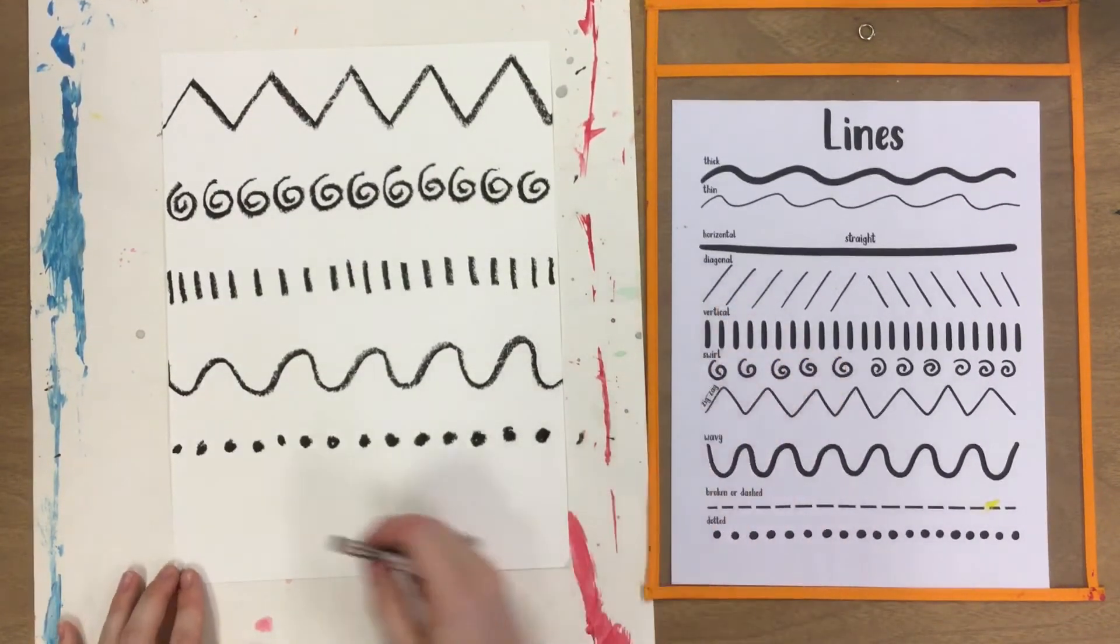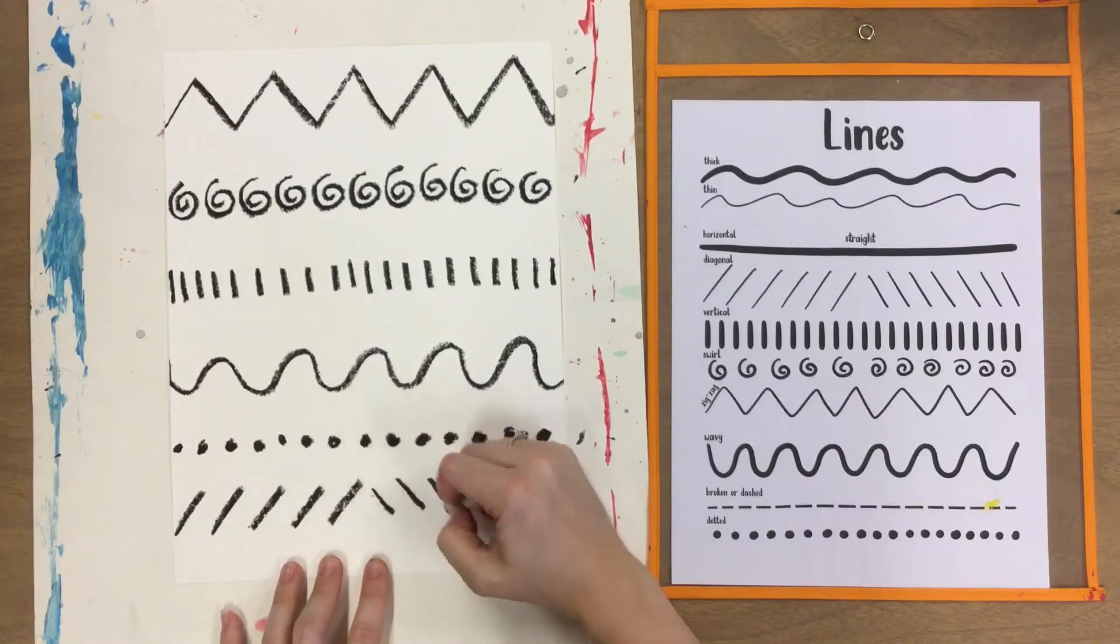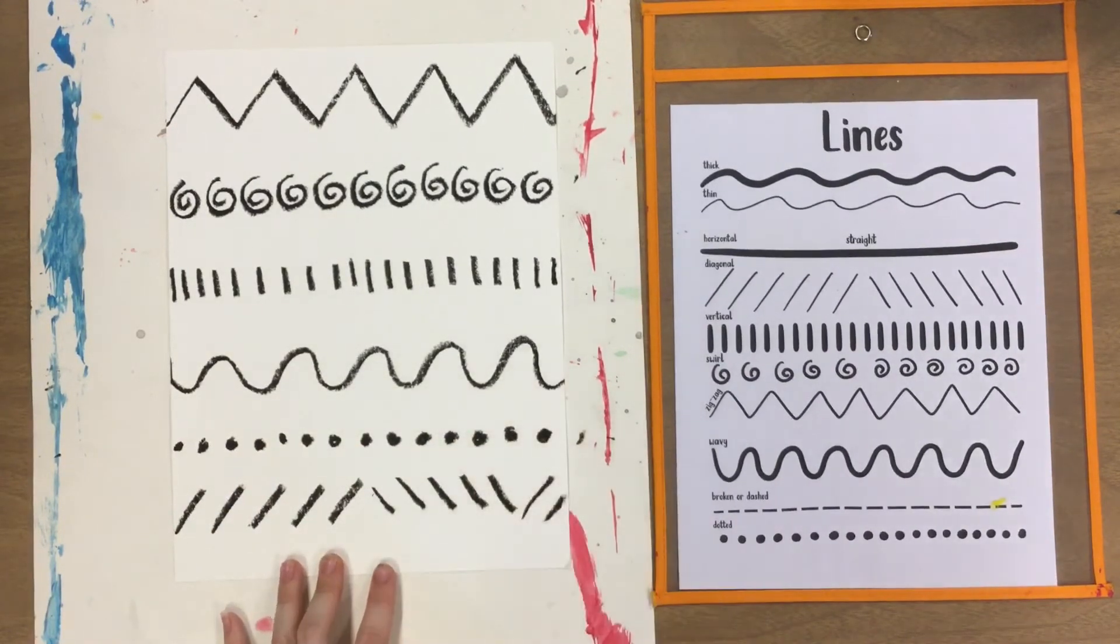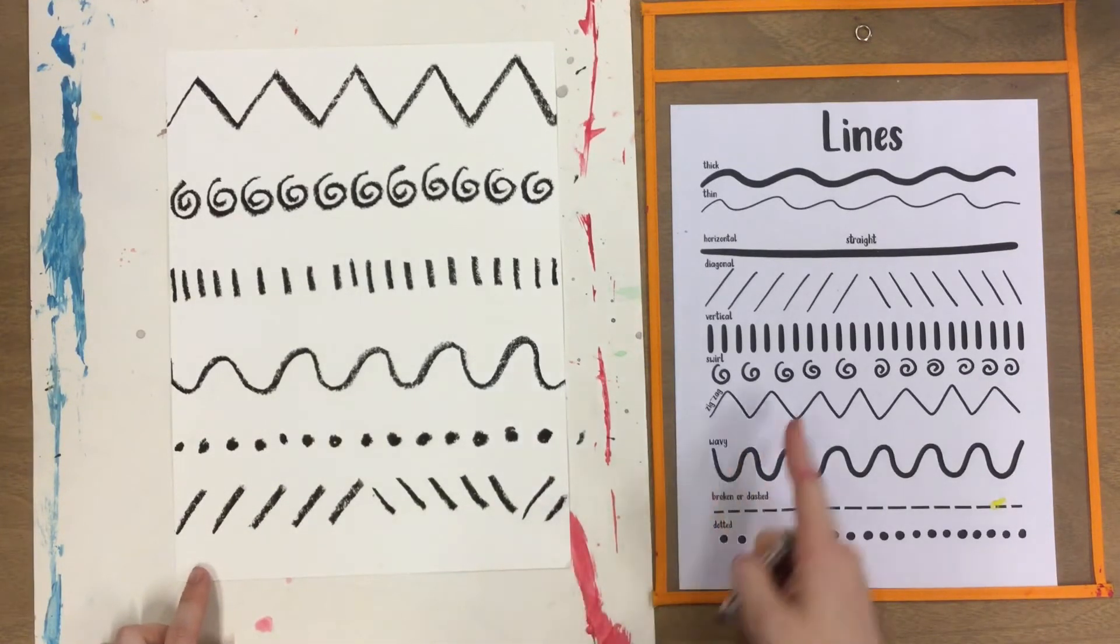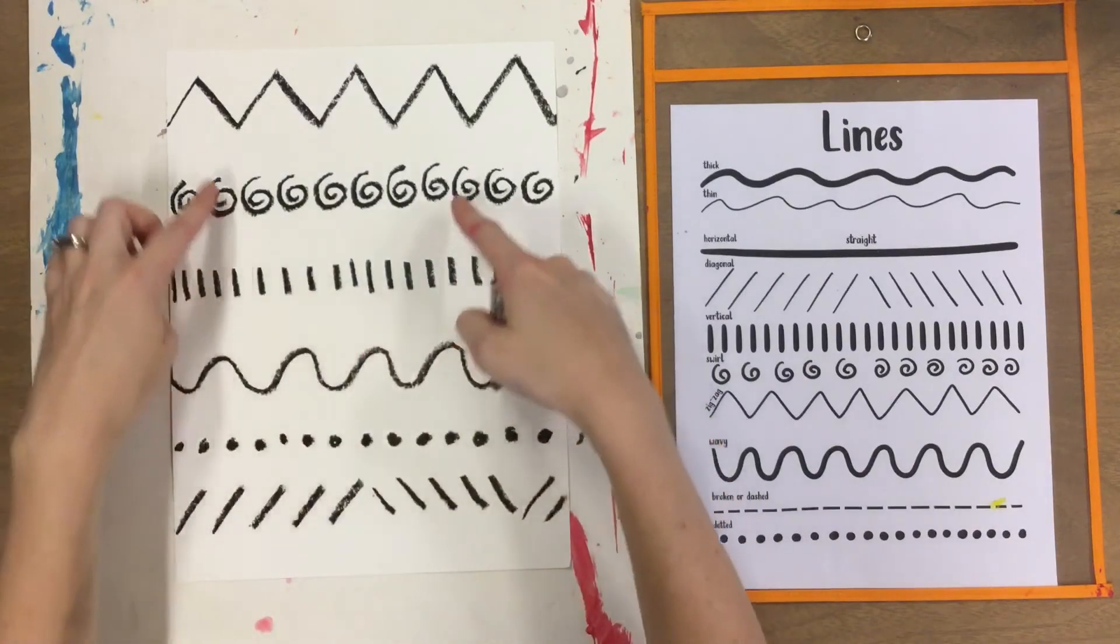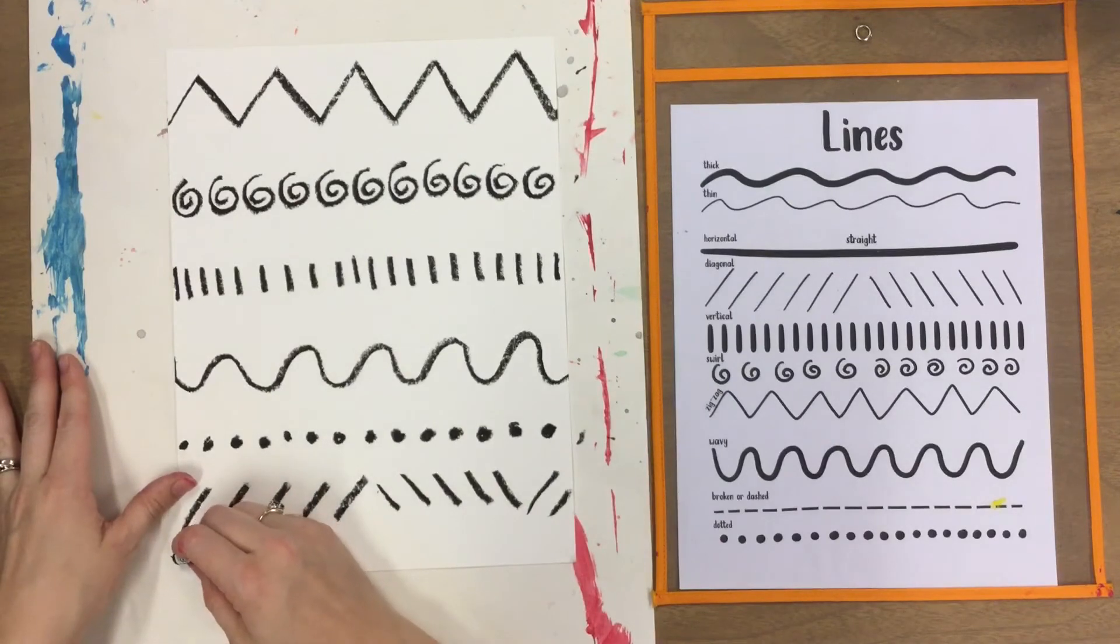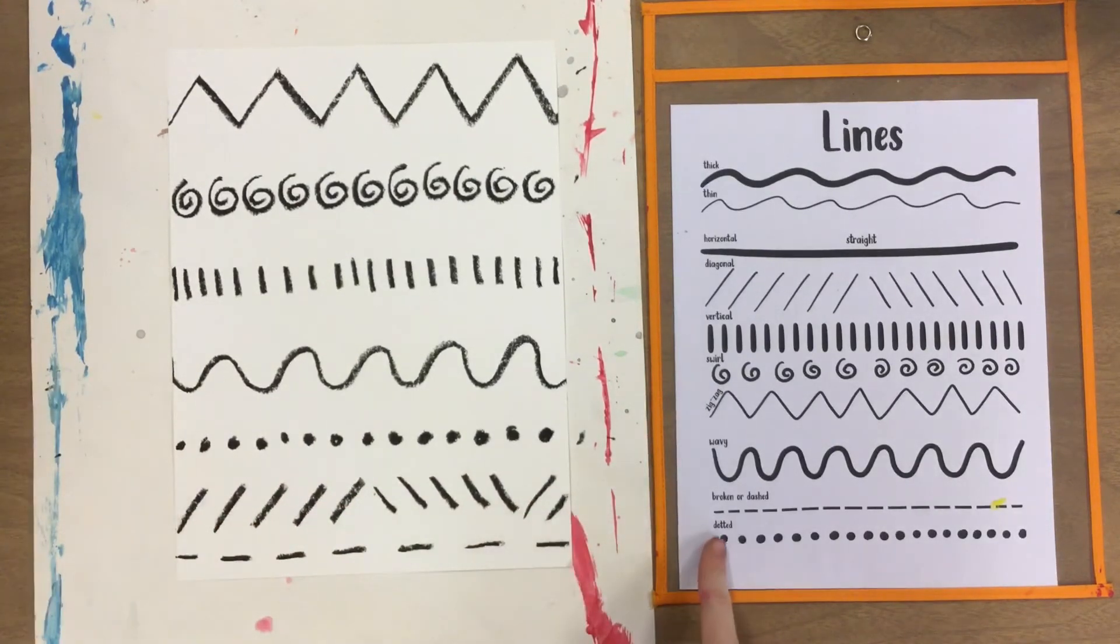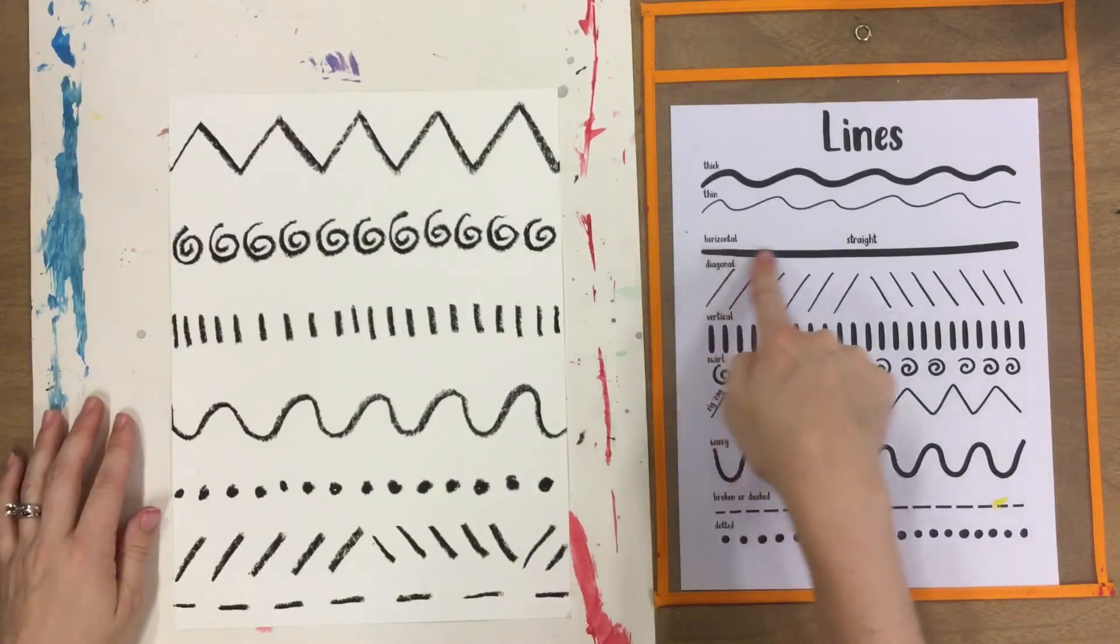Now I'm going to make some diagonal lines. Now you can see I'm kind of running out of space, but I have a few more lines that I would like to make. So you might have to work up in an area where maybe you have a little bit more space. Broken or dotted lines...